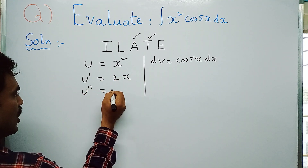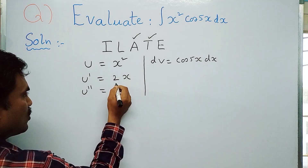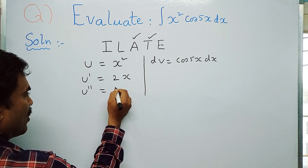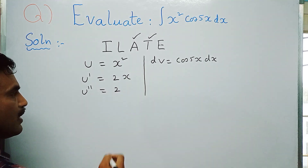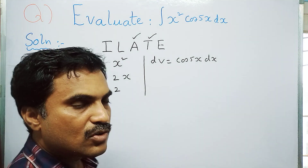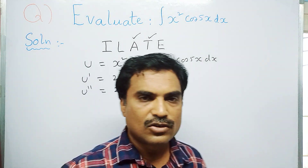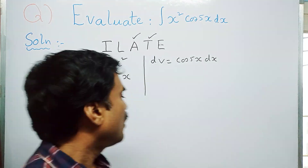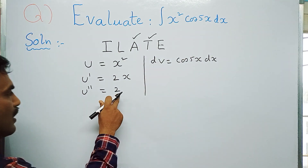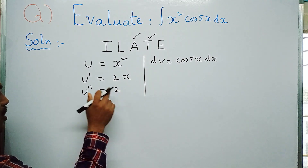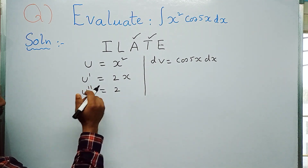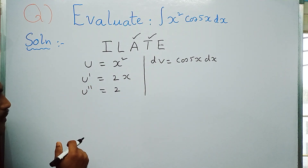Since 2 is a constant, d/dx(x) = 1, so u″ = 2. We have arrived at a constant, so we stop the differentiation here.